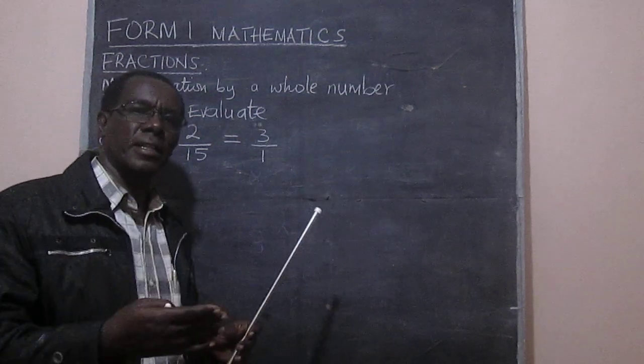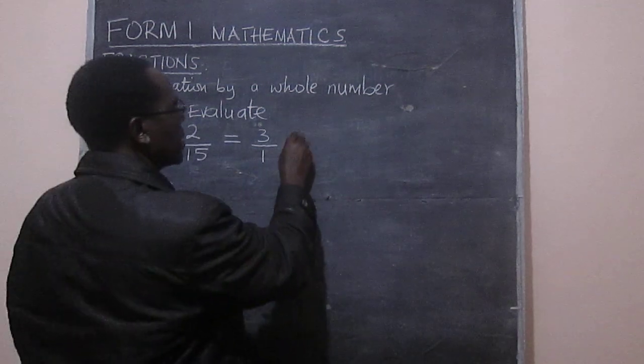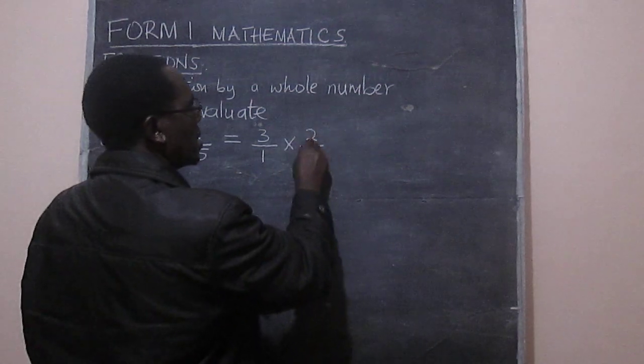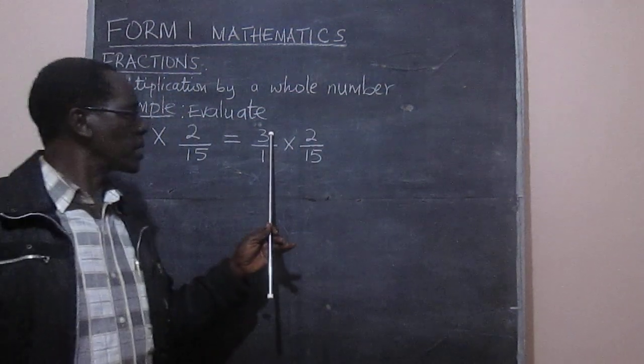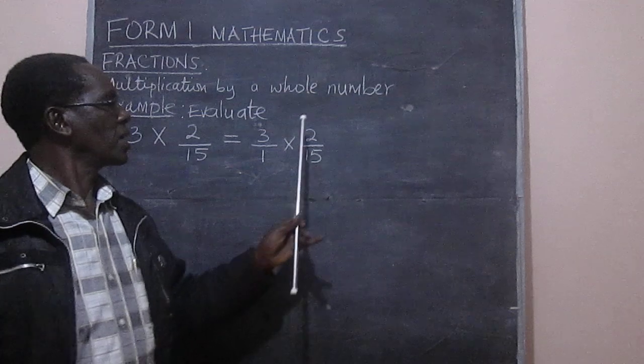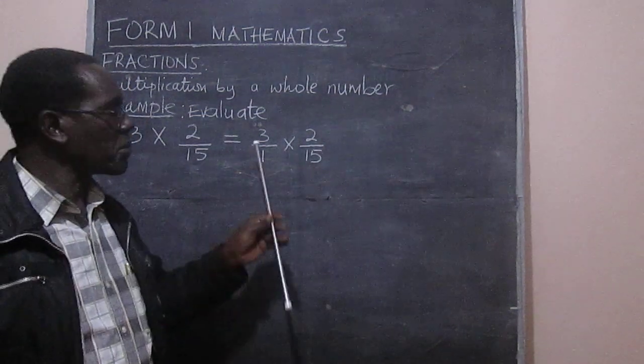So that looks like the other fraction here. And then when we have it like that, we now have the two fractions with the numerator and the denominator. And then from there, we look at the common factor.